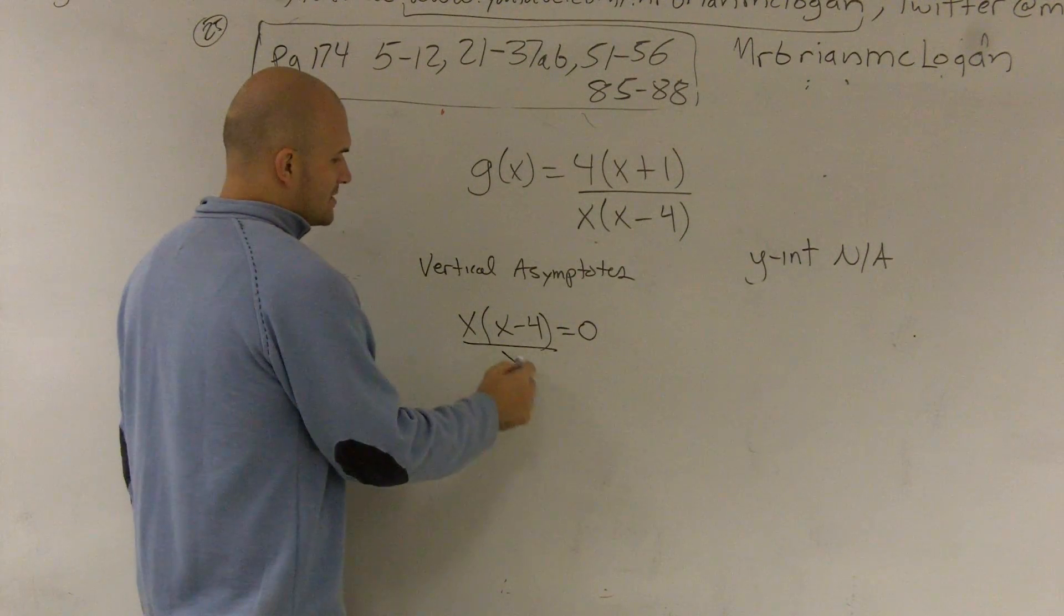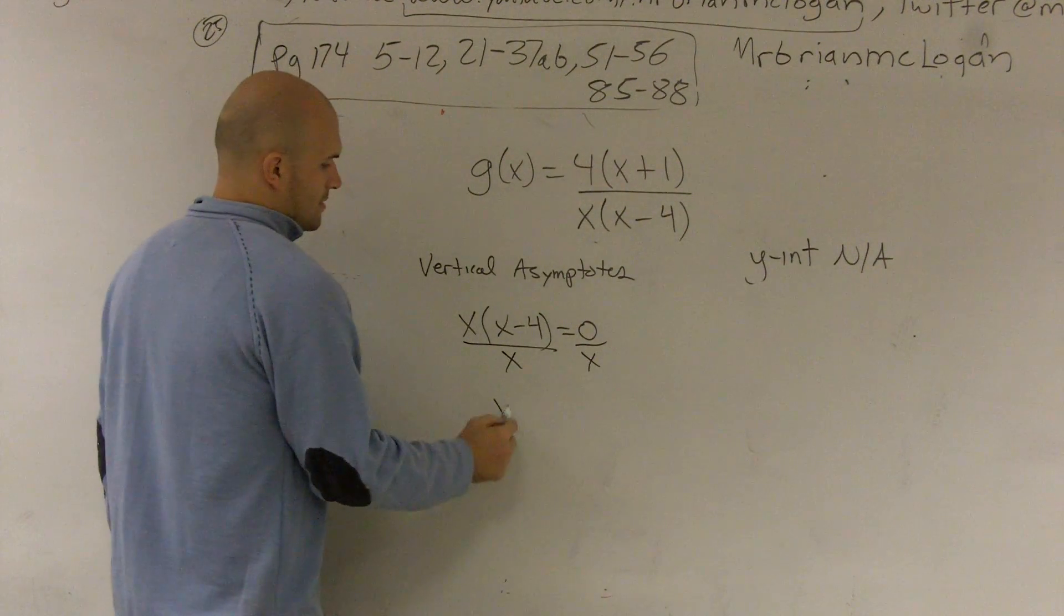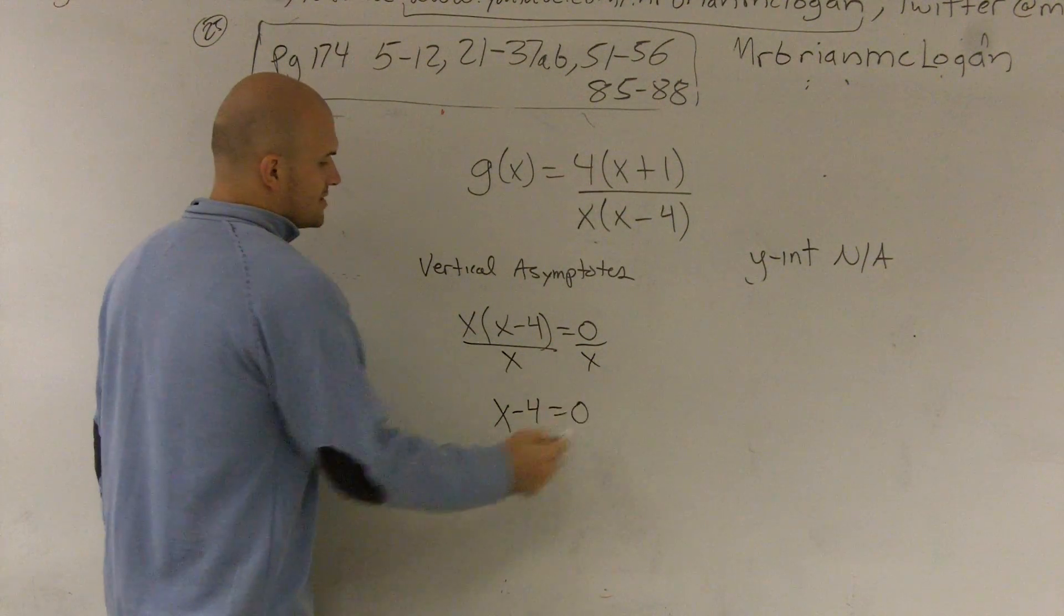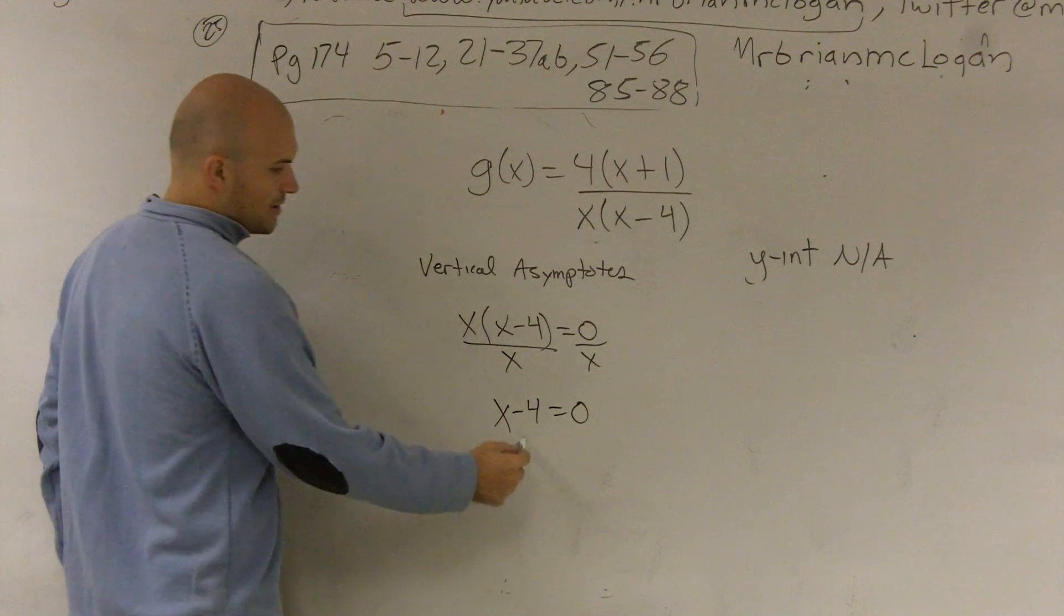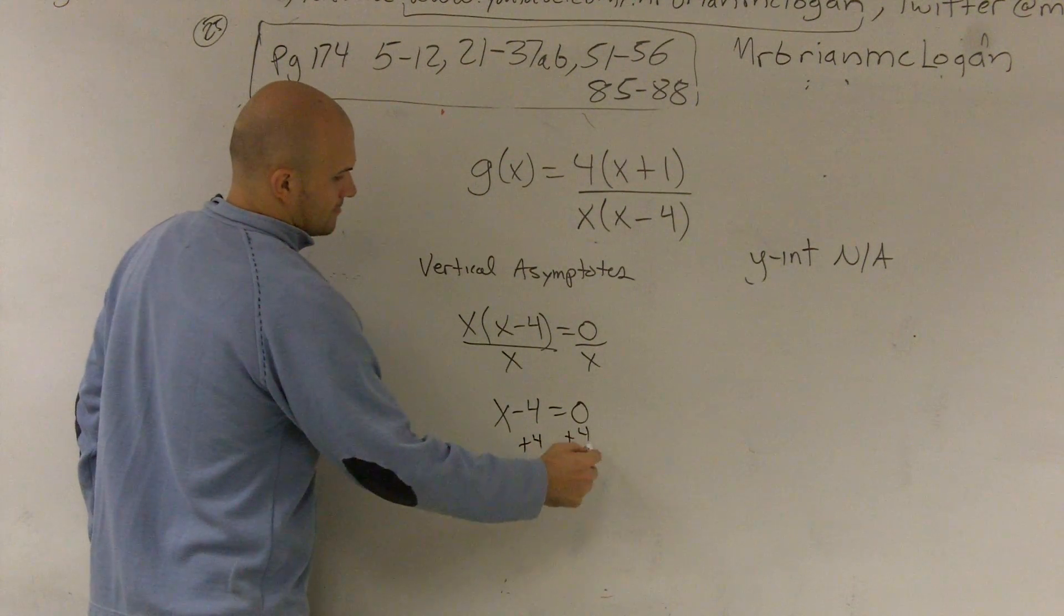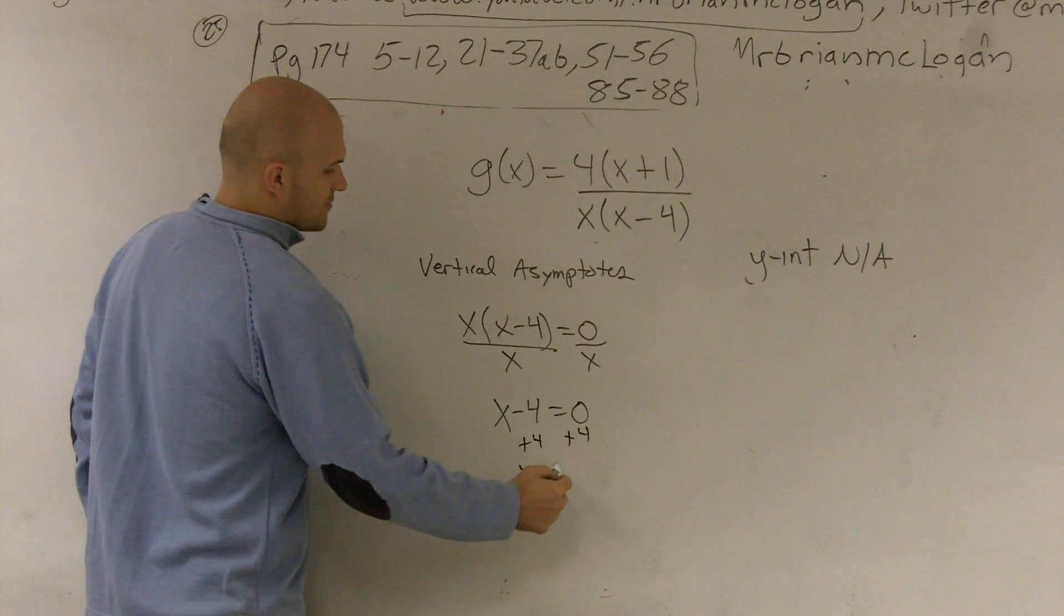Divide by x. x minus 4 equals 0. Add 4. x equals 4.